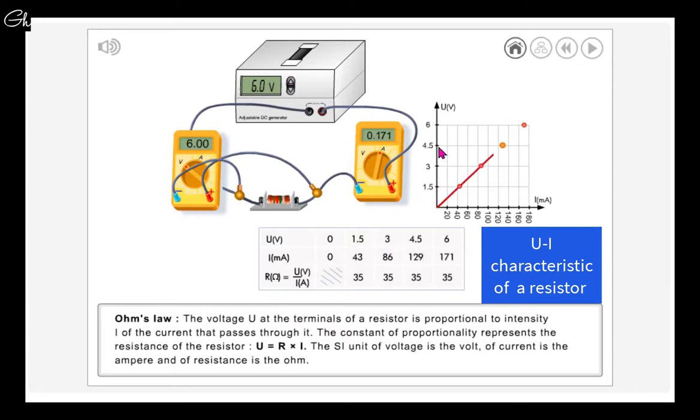As you can see, voltage and current are proportional. Dividing the voltage by the current or calculating the slope shows a constant value which is 35. This value represents the resistance of this resistor. To find the voltage across any resistor, we multiply the resistance by the intensity of the current.